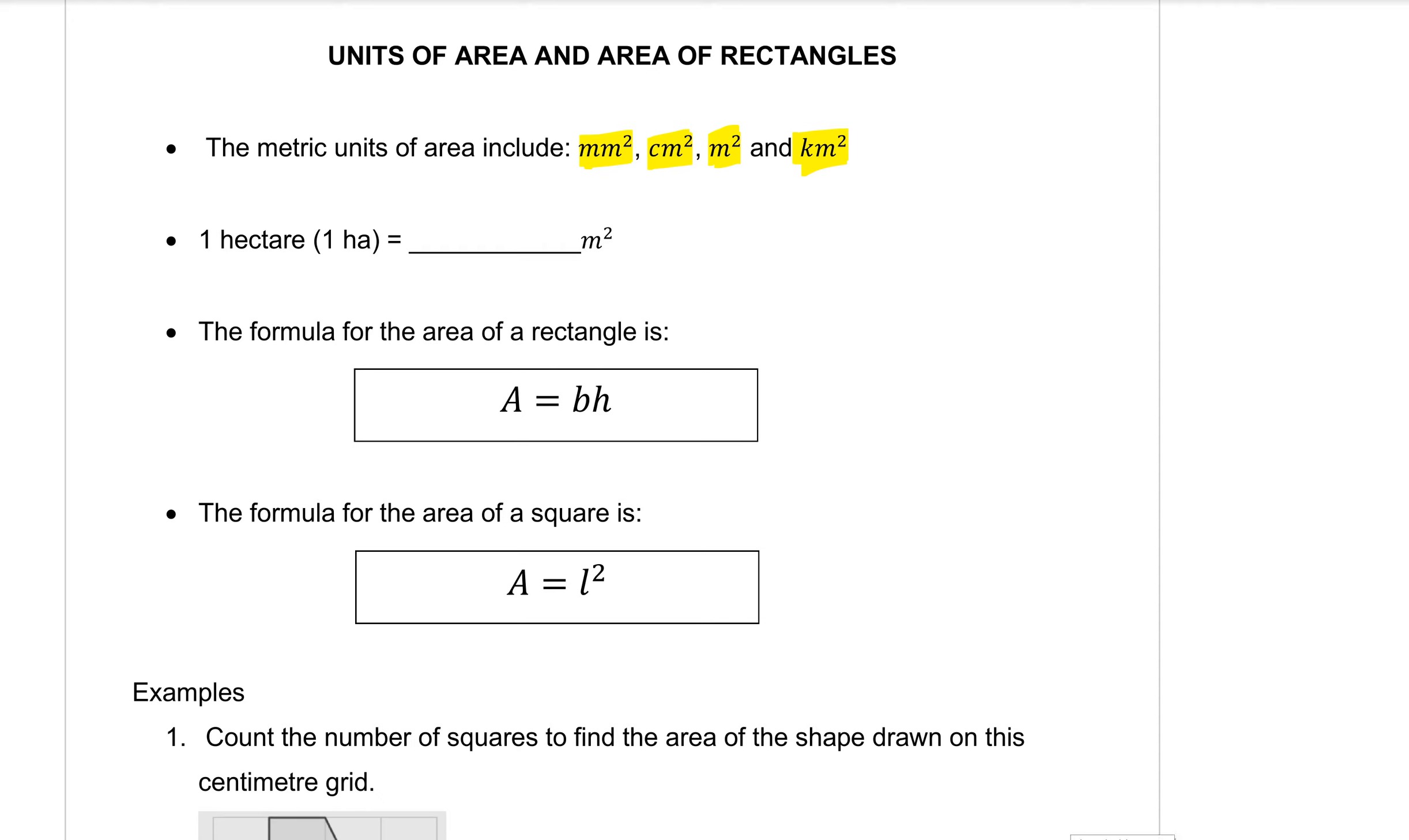So a unit that you might not be familiar with is the hectare. Now usually you measure land, that's one example of where you would measure something in hectares, large pieces of land not small bits of land. The symbol for hectare is HA and a hectare is equal to ten thousand meters squared. So that's a special one that gets a special mention.